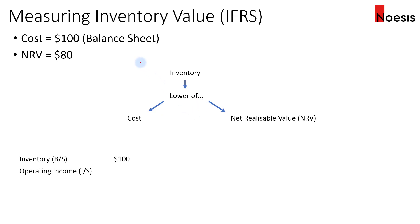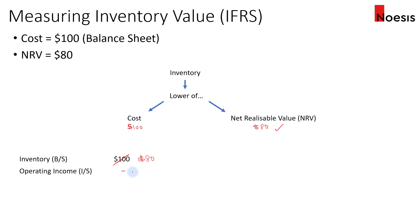Let's look at an example. The cost of inventory is $100, which is the carrying amount on the balance sheet, and the NRV has been assessed at $80. We take the lower of cost ($100) or NRV ($80), which is $80. So the inventory will be written down to $80 on the balance sheet, resulting in a loss of $20 recognized in the income statement.